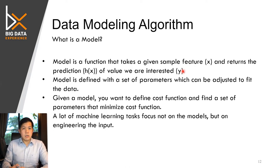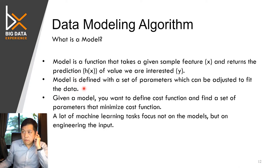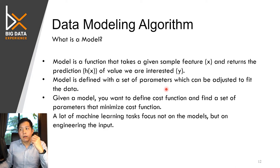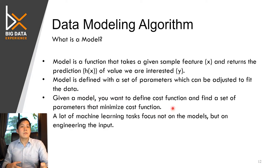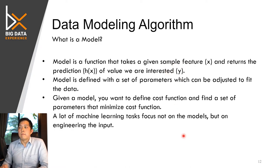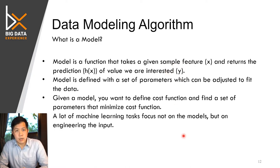In this machine learning model, we try to learn the function h(x). The model itself is defined by a set of parameters. We need to find the best parameters that will allow us to adjust the model to fit the data. To do that, you need to optimize a cost function. The cost function defines the cost — maybe the difference between the predicted and actual values. That is the machine learning model.